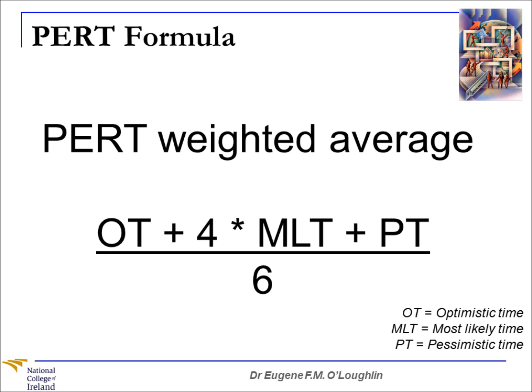Remember that multiplication takes precedence over addition, so the bit in the middle — four multiplied by the most likely time — is calculated first. Then you add the three values at the top and divide them by six, and that will give you a PERT weighted average: a single figure you can use to represent the duration of the task when there is uncertainty with optimistic, most likely, and pessimistic time estimates.